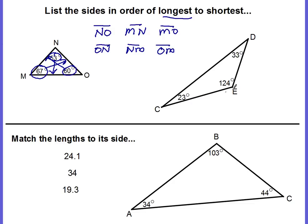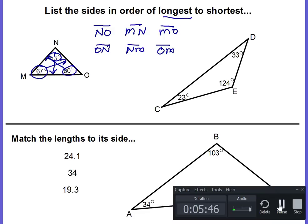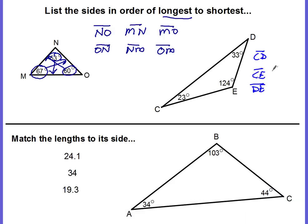Go ahead and try the next one. Put the sides in order from longest to shortest. Once you have your answer, come back and check your work. Longest to shortest: 124 degrees is the largest angle, so the longest side is CD — or you could say DC. The next largest angle is 33 degrees at angle D, so the next side is CE or EC. That means the shortest side is opposite the smallest angle, which would be DE or ED.